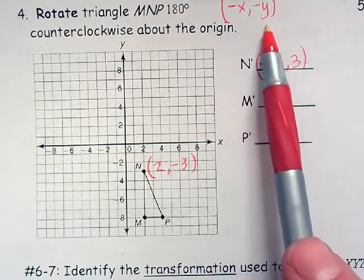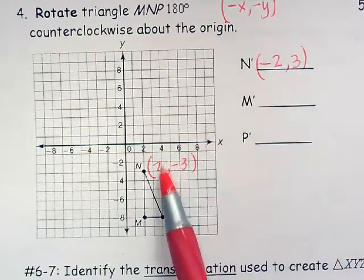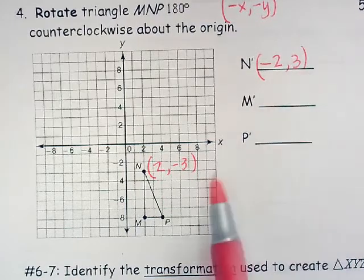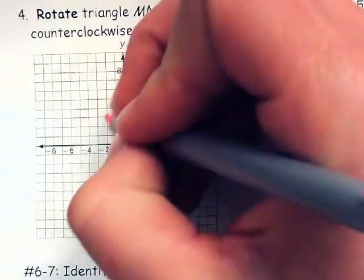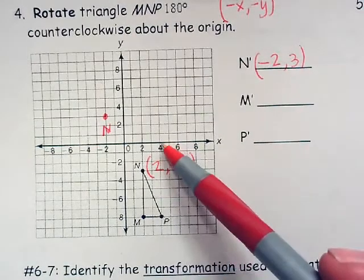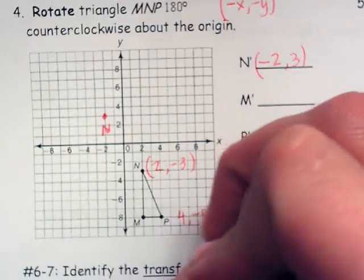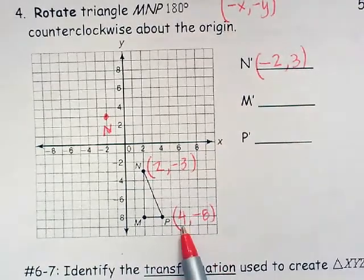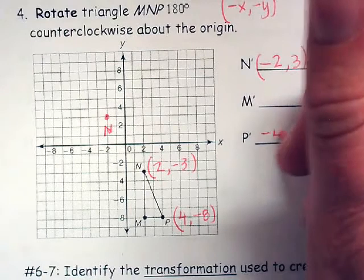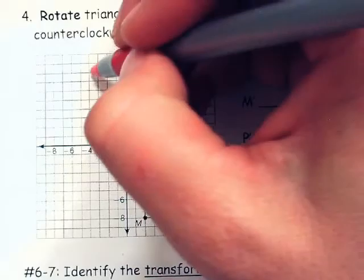Negative X, negative Y means the opposite of each coordinate. Since it's positive, we make it negative; since it's negative, we make it positive. We can see that negative 2, positive 3 is right there on the graph. P is at 4, negative 8. Changing the signs for a 180-degree rotation gives negative 4, positive 8. If I draw that, I go negative 4, positive 8.